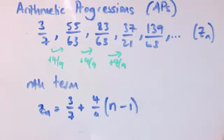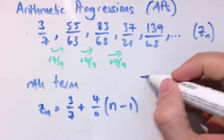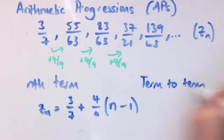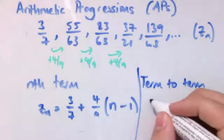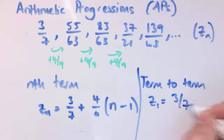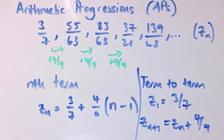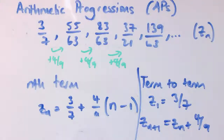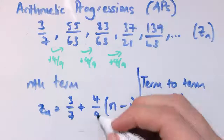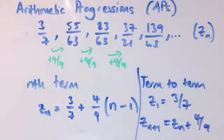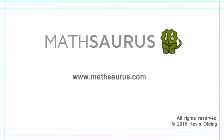The iterative term-to-term definition is as before: z_1 is 3/7, and z_{n+1} is z_n plus 4/9. In the next video we'll look at these in general and do more work with them. If you understand that an arithmetic progression is just adding on the same amount each time — or perhaps subtracting it — then however complex the numbers get, you can still deal with them.